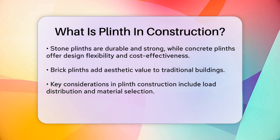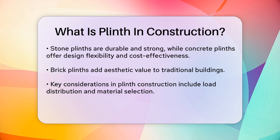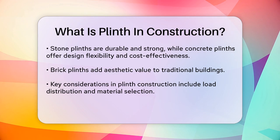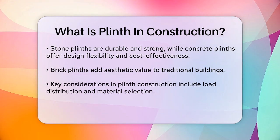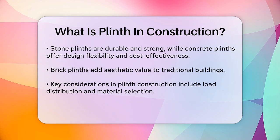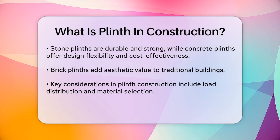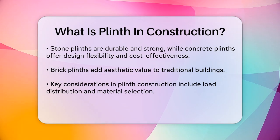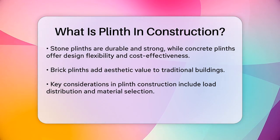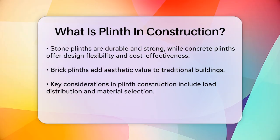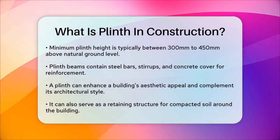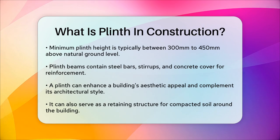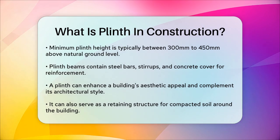The structure of a plinth beam involves specific elements. It includes steel bars with a minimum diameter of 12 mm at the bottom and 10 mm at the top, covered with a 25 mm concrete cover. Stirrups with a diameter of at least 6 mm and spaced 15 cm apart are also used to reinforce the beam.